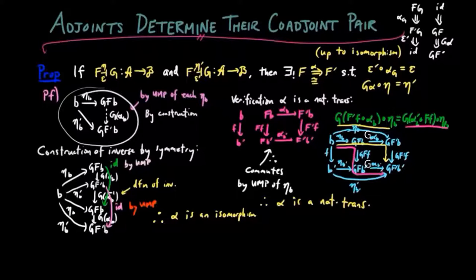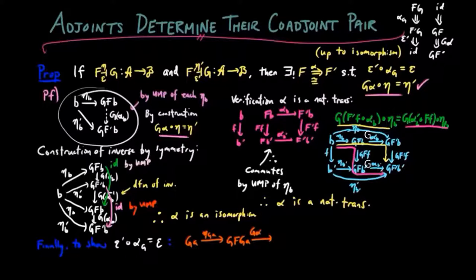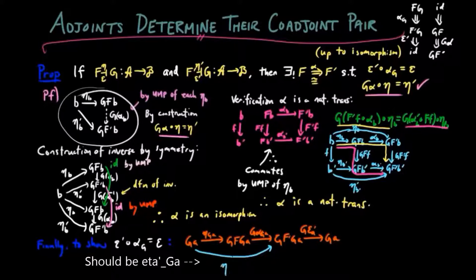By the construction of alpha, g alpha eta equals eta prime, which proves the second inequality in the claim above. Finally, we show epsilon prime alpha g equals epsilon. We again use the universal mapping property of the unit. Notice that eta g a followed by g f g a followed by g epsilon a prime equals eta prime g a followed by g epsilon prime a by definition of alpha.